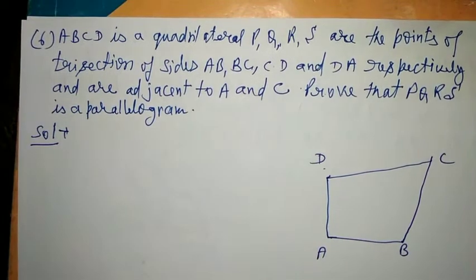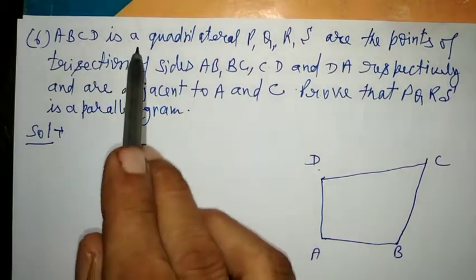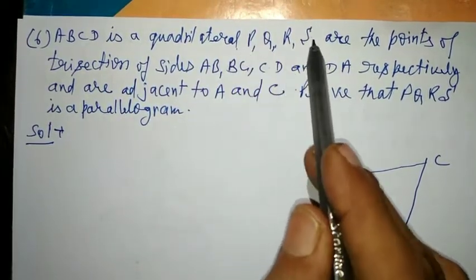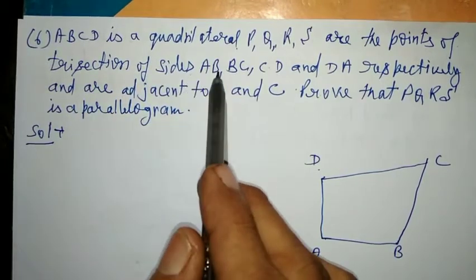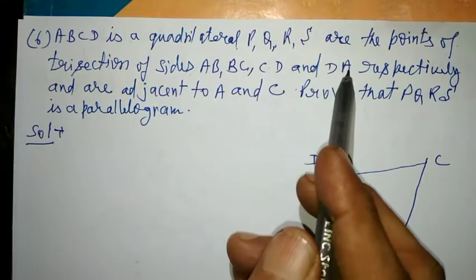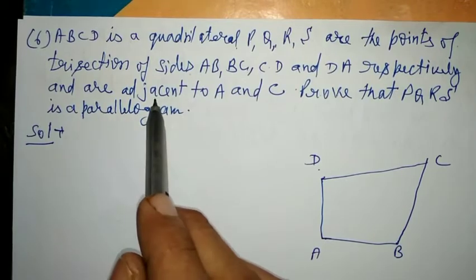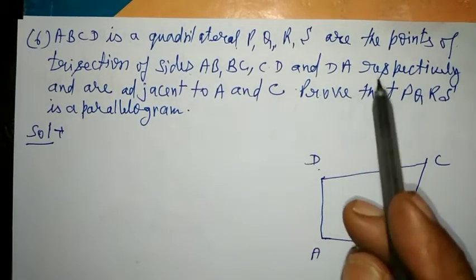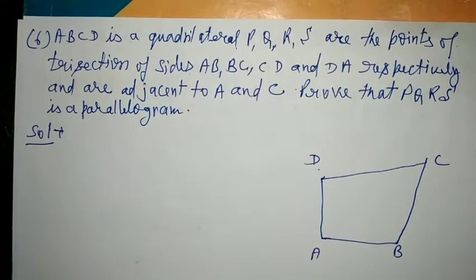Question number 6. ABCD is a quadrilateral. P, Q, R, S are the trisection points of sides AB, BC, CD, and DA respectively, and are adjacent to A and C. Prove that PQRS is a parallelogram.